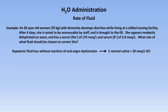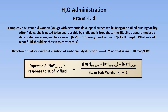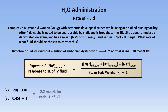Let's figure out how much her serum sodium should change with each liter of fluid. Plugging in the values: half normal saline is 77 mEq per liter of sodium, and we have 20 mEq per liter of potassium. Her current serum sodium is 170, her lean body weight is 70 kg, and as she is elderly, her proportionality constant becomes 0.45. This works out to be –2.2 mEq per liter, so for every liter of this fluid she receives, we expect her serum sodium to decrease by 2.2 mEq per liter.